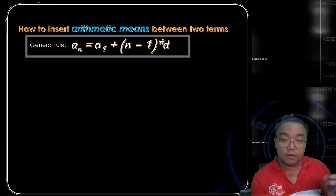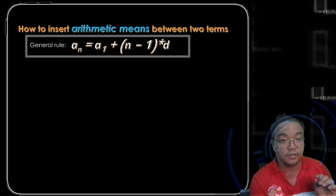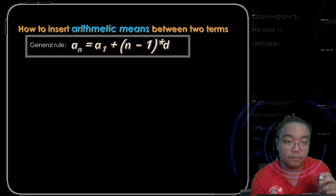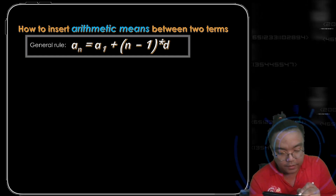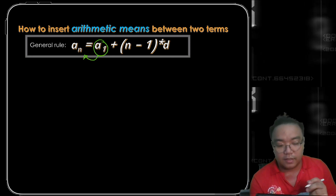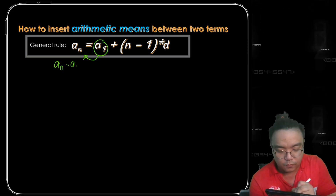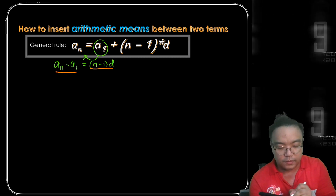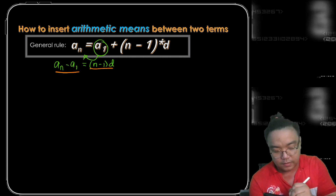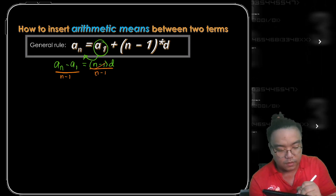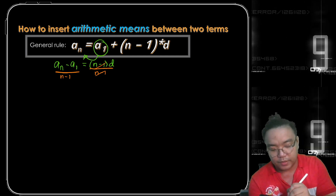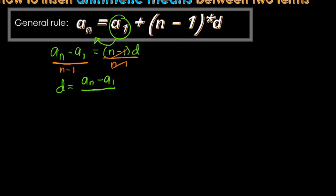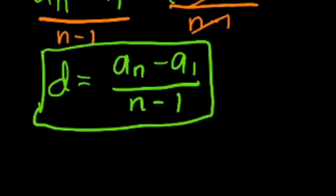Another way to find the common difference is by manipulating the general formula. Since a sub n equals a sub 1 plus n minus 1 times d, isolating d gives us: a sub n minus a sub 1 equals n minus 1 times d. Dividing both sides by n minus 1, the common difference equals the last term minus the first term, divided by n minus 1.